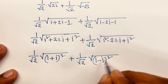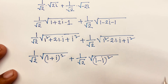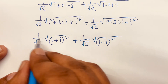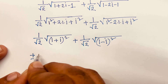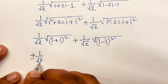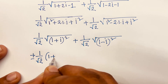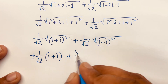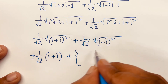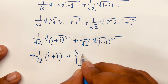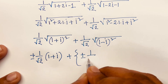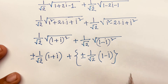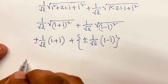Using the identity (a − b)² = a² − 2ab + b², the square roots cancel, giving us ±1/√2 · (1 + i) plus ±1/√2 · (1 − i).